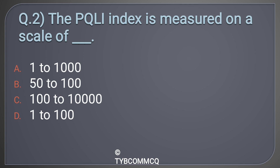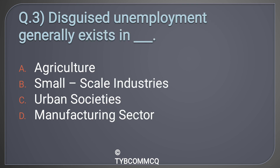Question number two: The PQLI index is measured on a scale of ___. Option A: 1 to 1000, Option B: 50 to 100, Option C: 100 to 10,000, Option D: 1 to 100. The correct answer is Option D: 1 to 100.